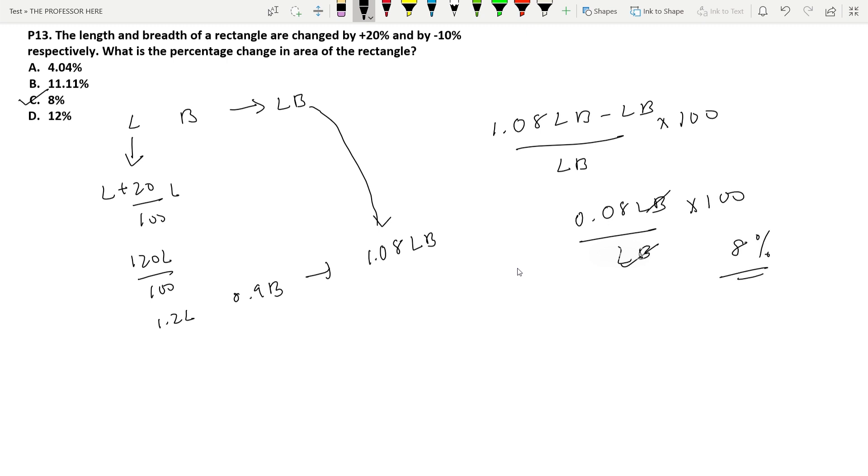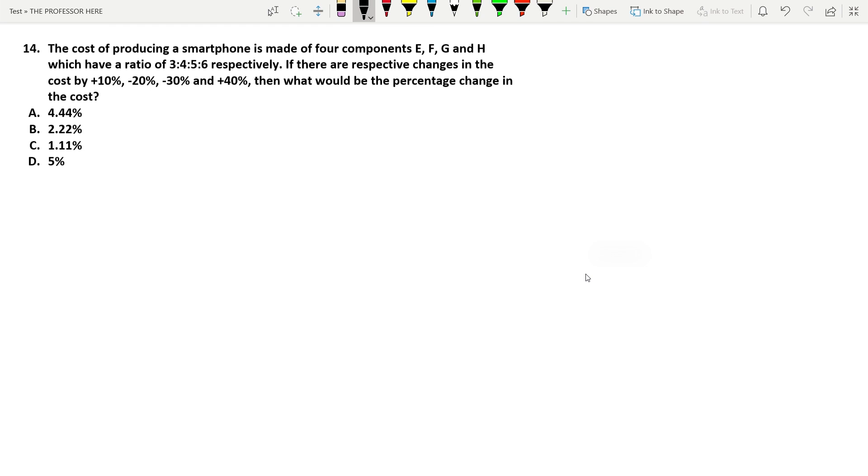Question number 14: The cost of producing a smartphone is made of four components E, F, G and H which have a ratio of 3 is to 4 is to 5 is to 6 respectively. If there are respective changes in the cost by 10 percentage, minus 20 percentage, minus 30 percentage and plus 40 percentage, what is the percentage change in the cost? So overall percentage change in the cost is asked here. To do that, let's assume that the cost of each component is 30, 40, 50 and 60. We are following the same ratio as this and assuming the value as 30, 40, 50 and 60.